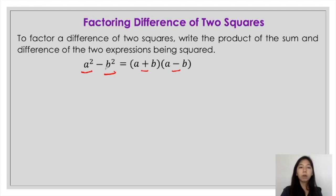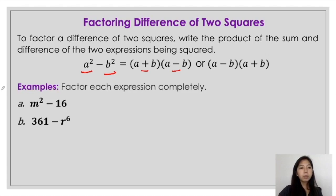So those are the factors of a squared minus b squared. The order of the operations can be subtraction first or addition first — either way, as long as one quantity has addition and the other has subtraction. Let's try some examples.